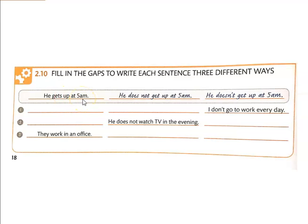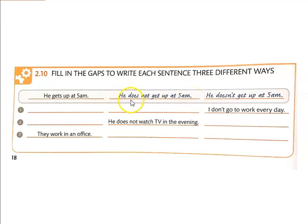Now we want to make this negative. Several steps we have to do. We have 'he,' we add 'does not,' then we drop the S: get up at 5 a.m. He does not get up at 5 a.m.